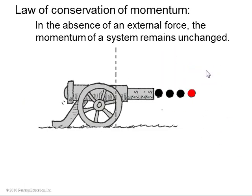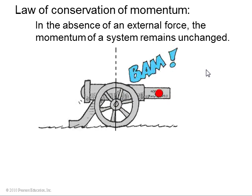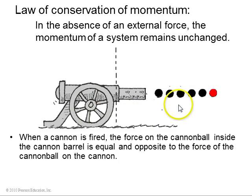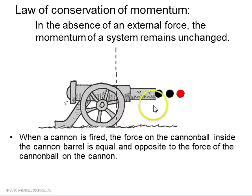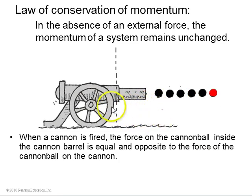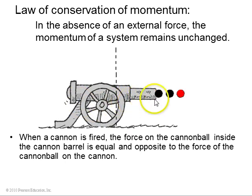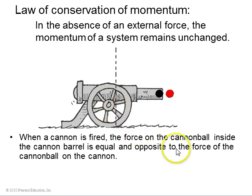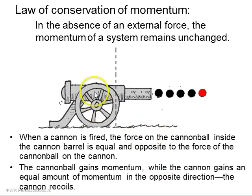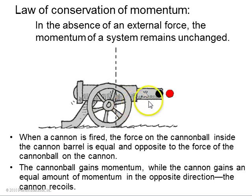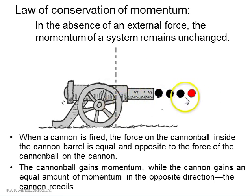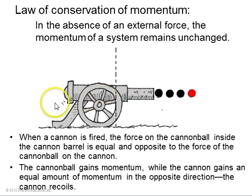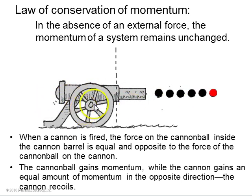The law of conservation of momentum states that if there's no external force, the momentum of a system is unchanged. This animation shows a cannon firing a cannon ball. The force on the cannon ball inside the cannon has an equal and opposite reaction on the cannon, so there are only internal forces. Therefore, the system of the cannon plus cannon ball has the same momentum before and after. Since the cannon ball has less mass, it goes with a higher speed, while the cannon, having higher mass, goes to the left with a lower speed.